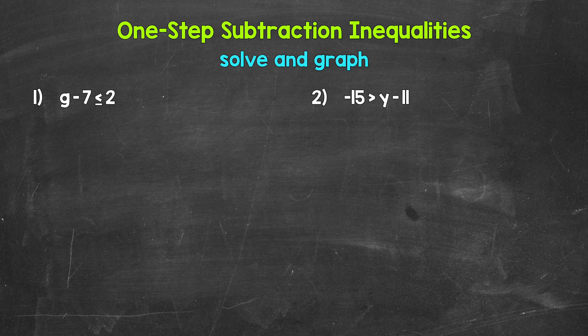Let's jump into number one, where we have g minus seven is less than or equal to two. So we need to solve this — we need to isolate that variable of g. Now we are subtracting seven, so we need the inverse operation of subtraction.